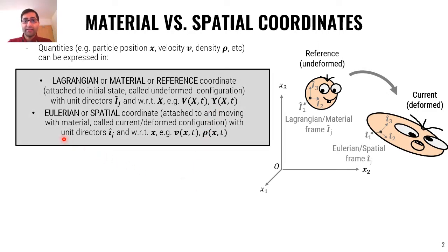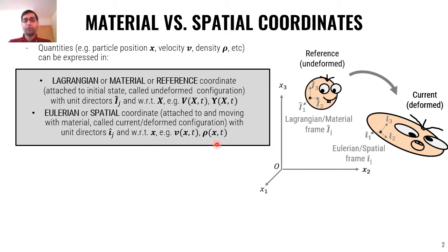Alternatively, we can define them in the Eulerian, or spatial, coordinate. This coordinate is attached to and moving with the material — it is called the current or deformed configuration. The unit vectors are lowercase i. Quantities are defined with respect to lowercase x, the current position, and shown by lowercase letters. For example, v for velocity and rho for density expressed with respect to current position.